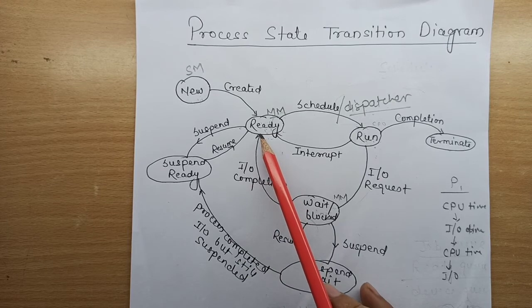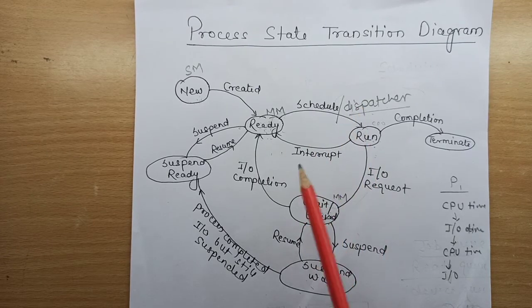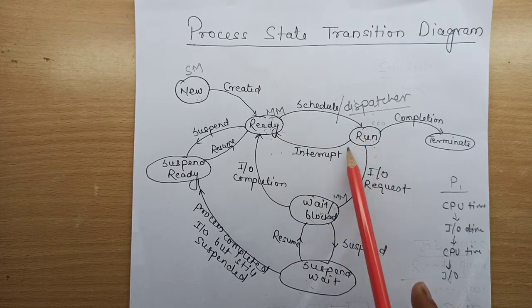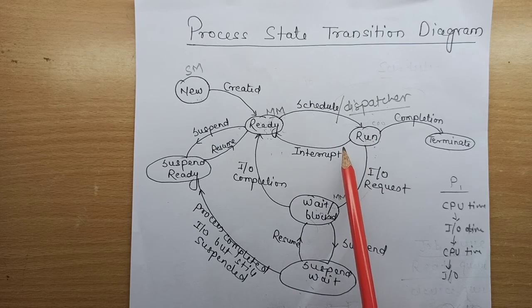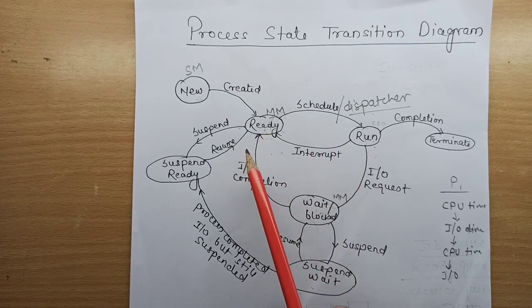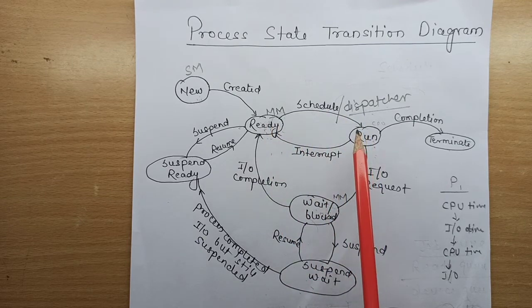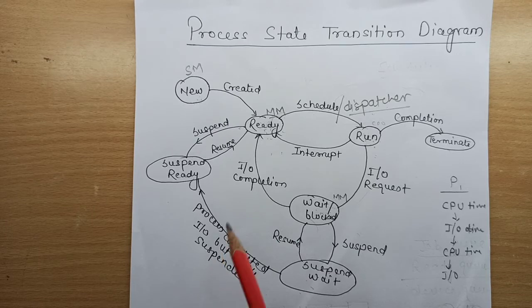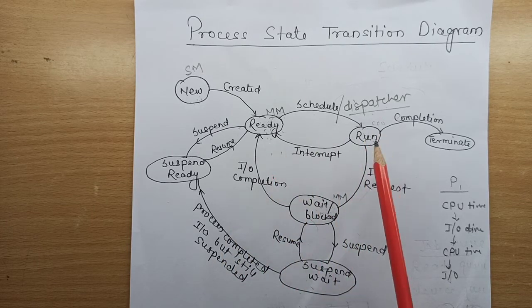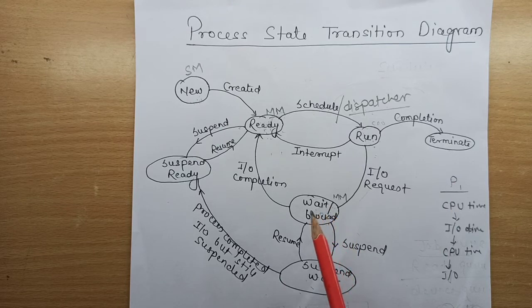If we put the I/O-waiting process back in the ready state, the scheduler might schedule it to the CPU again, but its I/O operation is not complete, so the CPU would be wasted. To maximize CPU utilization, we don't put it in the ready state — instead we put it in the wait state or blocked state. This way the scheduler will not schedule it to the CPU unnecessarily.